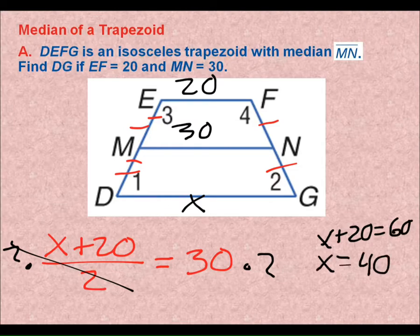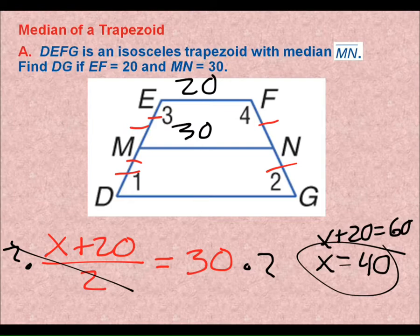X plus 20 is equal to 60. Subtract 20 from both sides. That means the other base, this base here is 40. That's because 20 plus 40 is 60. Half of 60 is 30. That's my median.